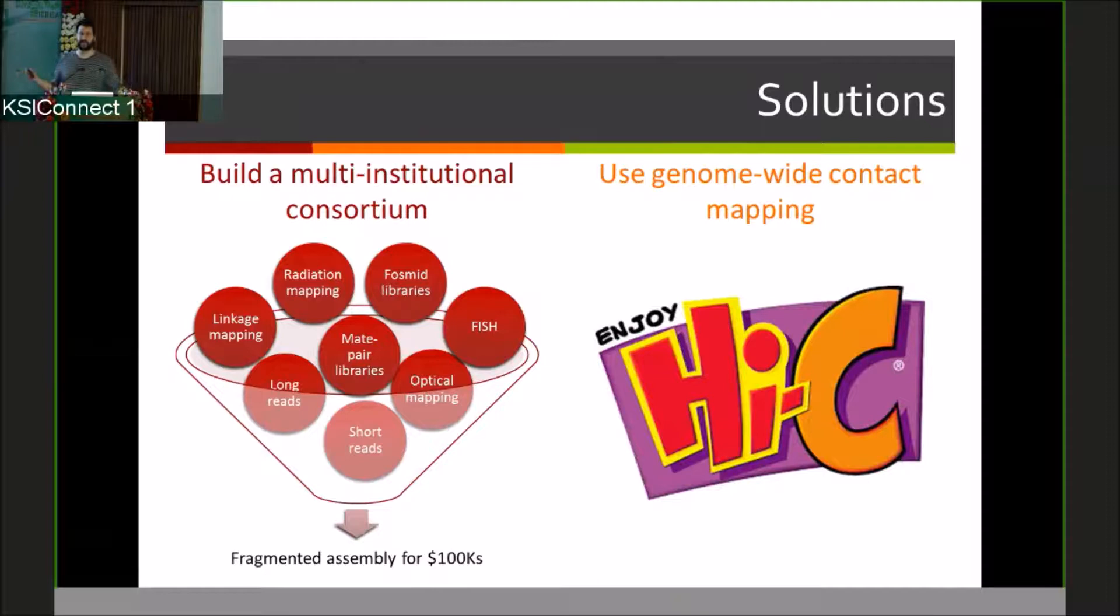What would it take to take things further? Typically, if you actually want to get beyond this stage of having lots of tiny contigs and figure out what the chromosomes are, what people have traditionally done is build these multi-institutional international consortia. This is where you start to spend millions, tens of millions of dollars. You generate many different data types, all with the goal of saying this contig is on the same chromosome as that contig, this contig comes right before that contig, oriented towards each other.